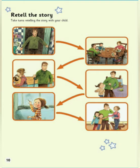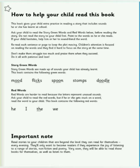How to help your child read this book. Story Green Words: Mood, Flicks, Spoon, Stomps, Doodle. Red Words: He, I, The, We.